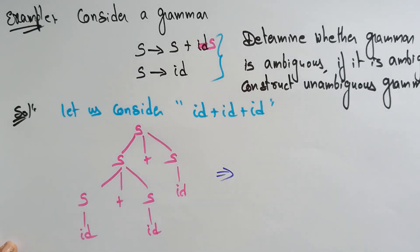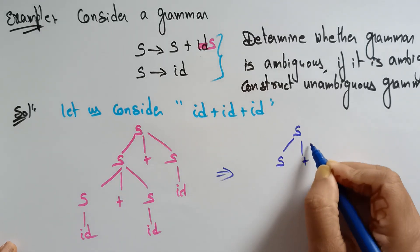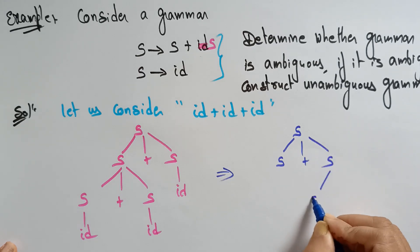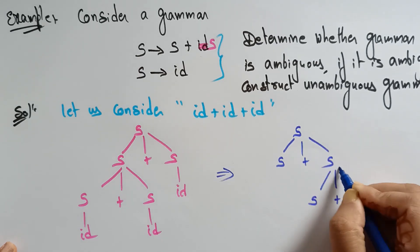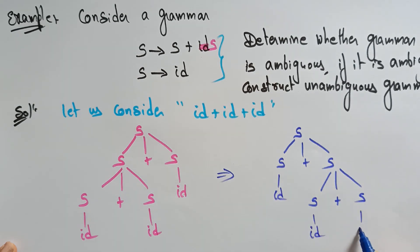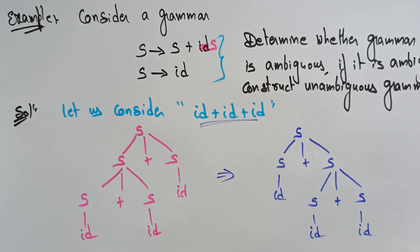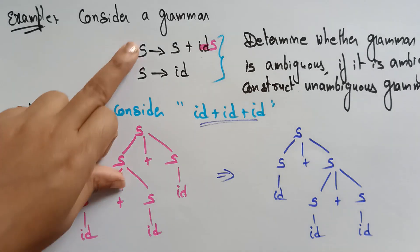This parse tree can be represented in another way. S is replaced with s plus s, and this s is replaced with s plus s, and this is replaced with id, id, id. So the same input string can be represented in two different parse trees. I can clearly conclude that this is an ambiguous grammar.